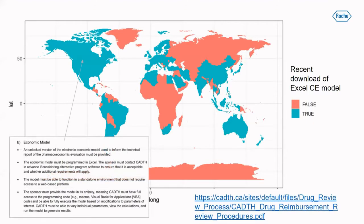From an overall view, I was curious to see which of our affiliates and which countries had been downloading and using Excel-based economic models. In the last couple of months, there have been 63 countries. Pulling up the requirements for Canada, there's a strong preference for Excel. While it is definitely possible to approach agencies with alternative options, that may not be what you want to do as a sponsor — you maybe want to meet what they ask for.